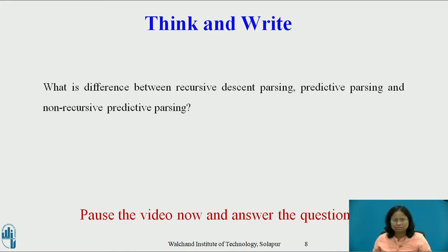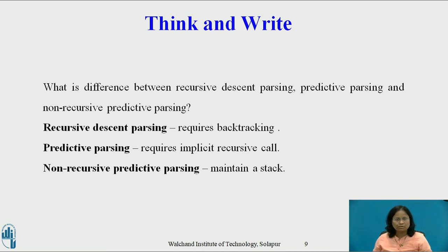Till now I have considered what non-recursive predictive parsing is and how it works. Now pause this video and reflect on this question: What is the difference between recursive descent parsing, predictive parsing, and non-recursive predictive parsing? Recursive descent parsing requires backtracking, while predictive parsing requires implicit recursive calls and no backtracking. Non-recursive predictive parsing maintains a stack explicitly rather than implicitly via recursive calls.